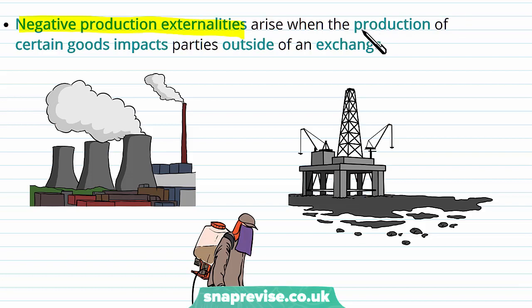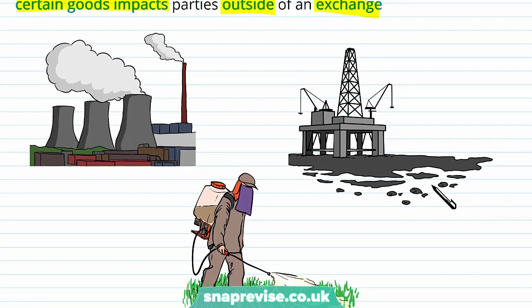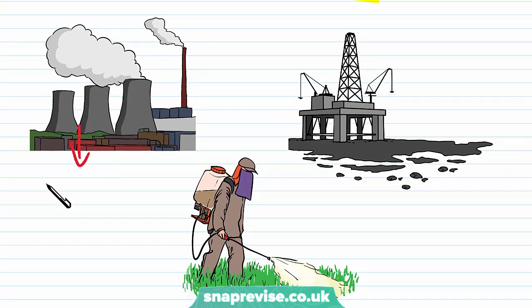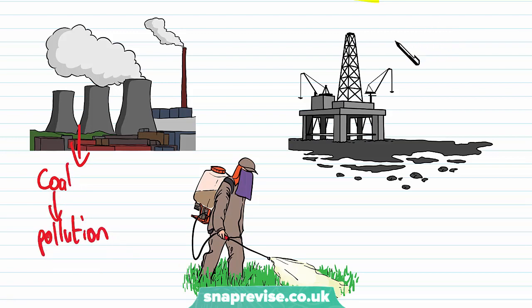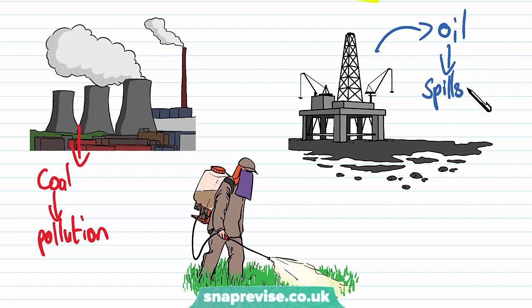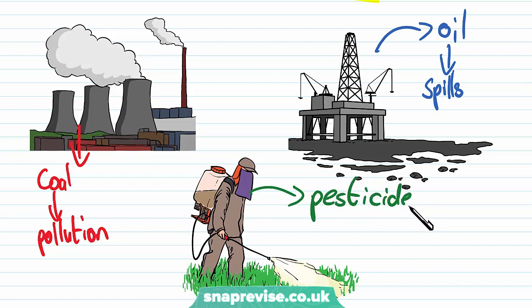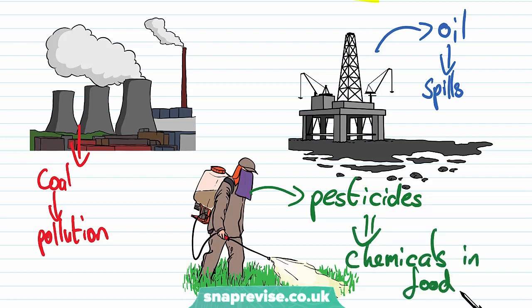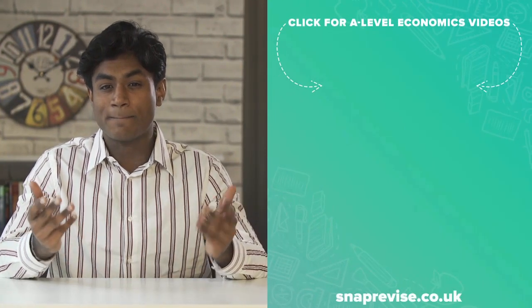Negative production externalities arise when the production of certain goods impacts parties outside of an exchange. Energy plants burning coal lead to higher pollution, harming the environment and people in the area. Oil drills at sea can cause spills that impact the environment and biodiversity. Farmers spraying pesticides and chemicals on crops can lead to chemicals in our food, causing costs for individuals consuming that food.